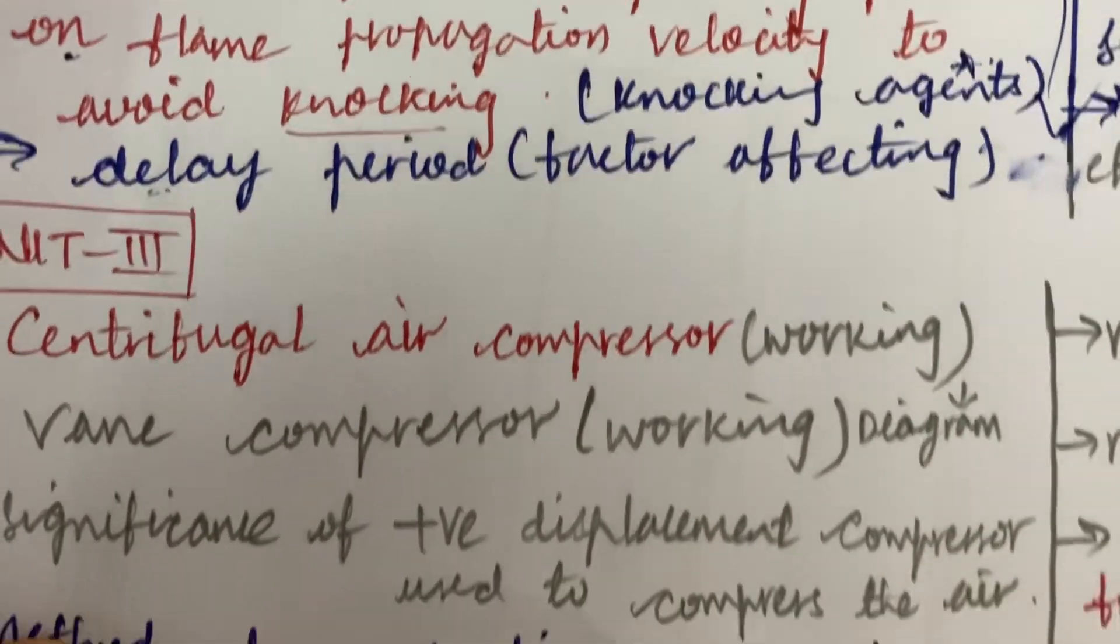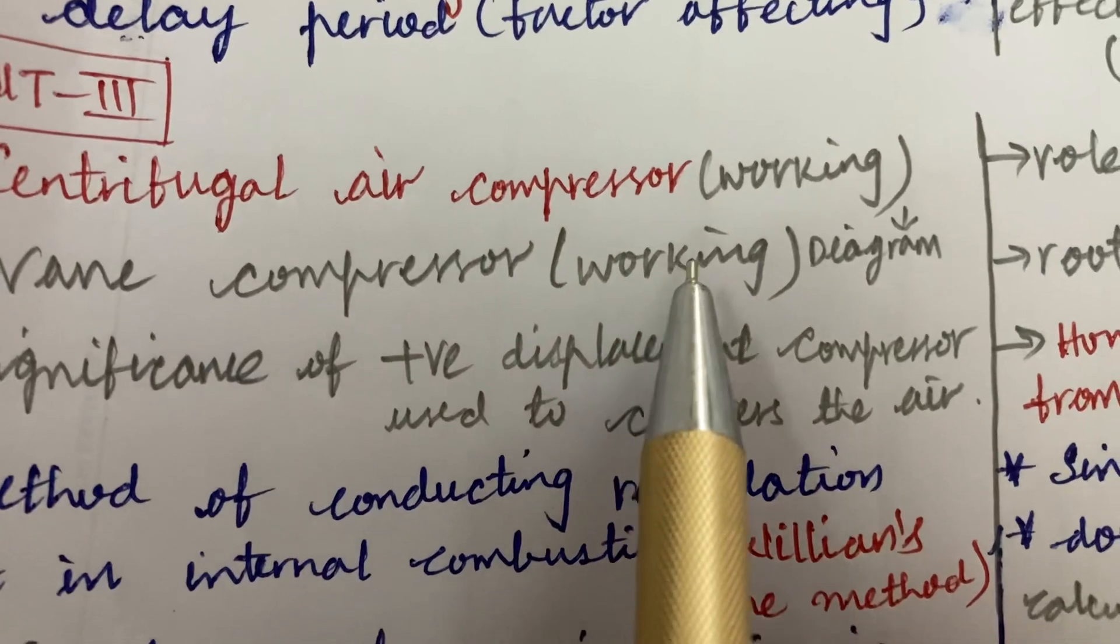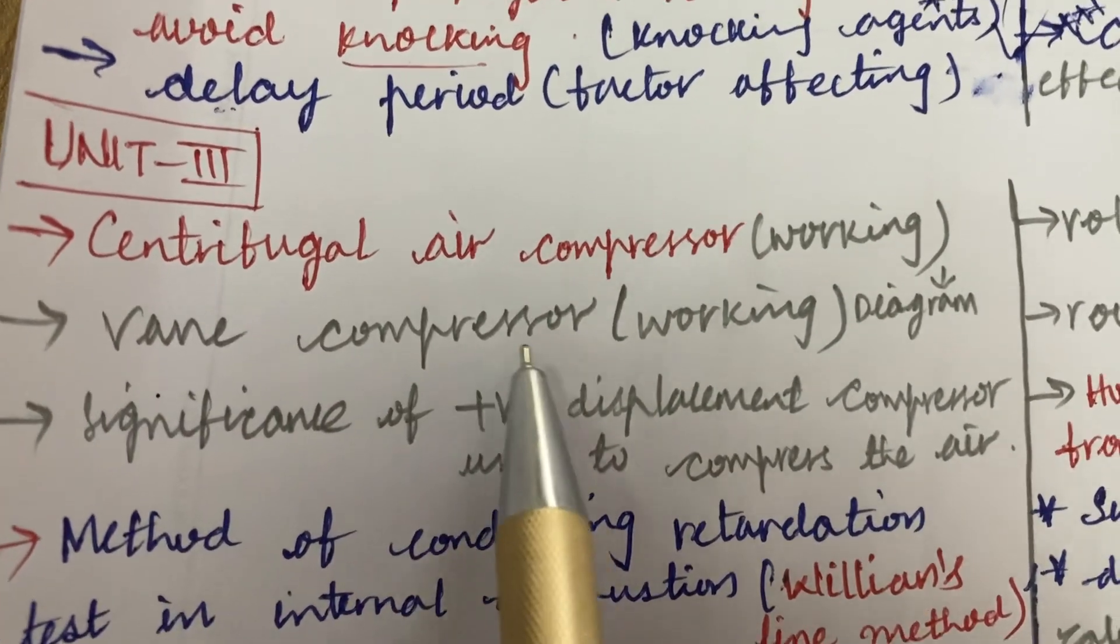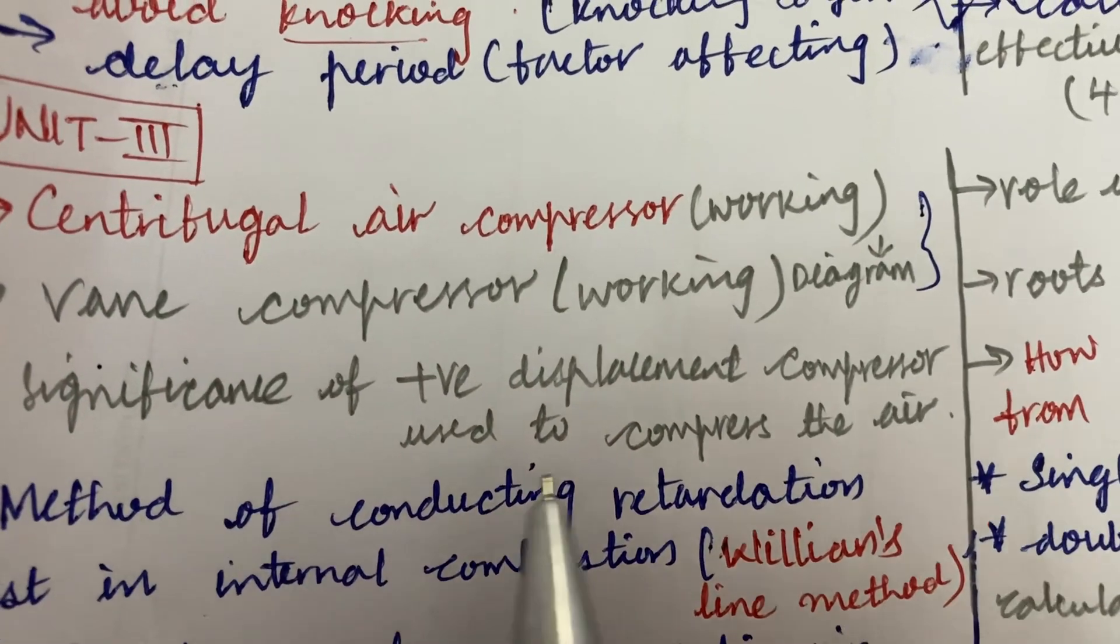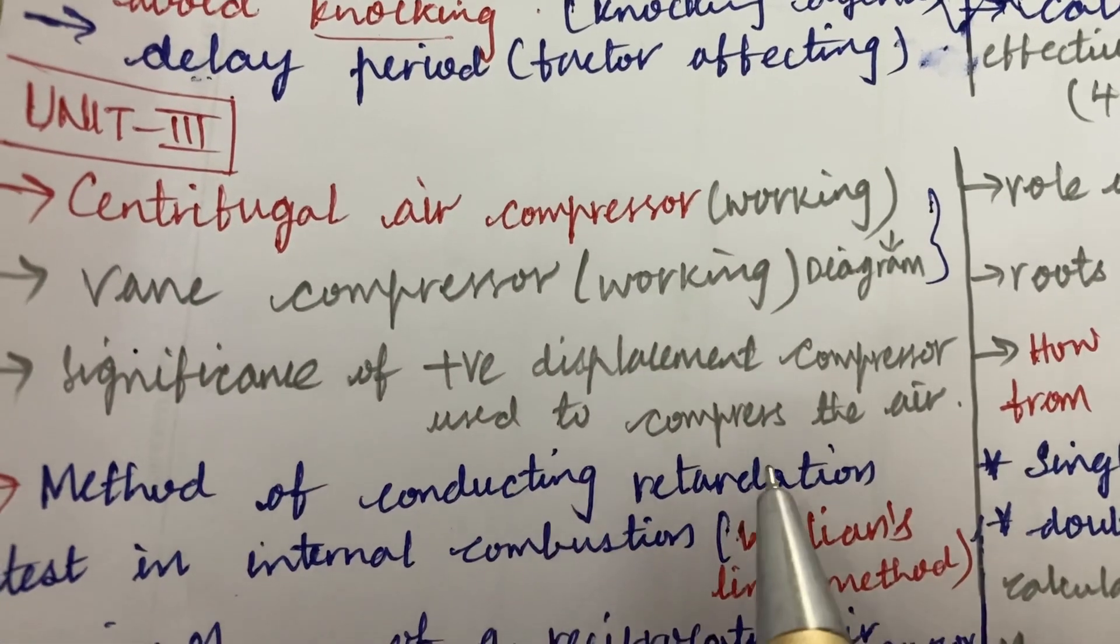Next, we will look at the third unit. It is all about the centrifugal air compressor and the working and the vane compressor working diagram. From these two parts, we can expect one question.